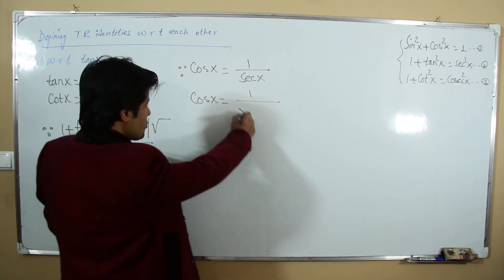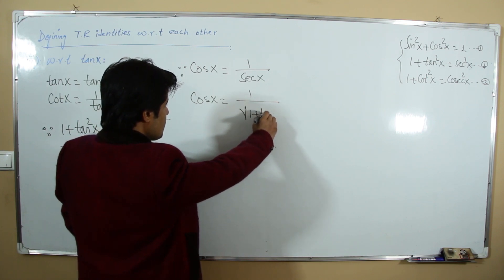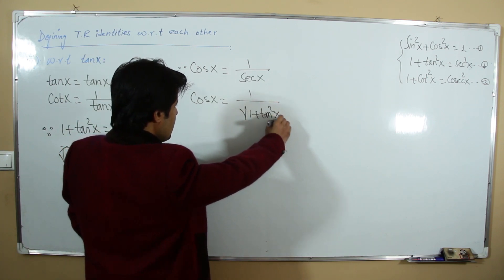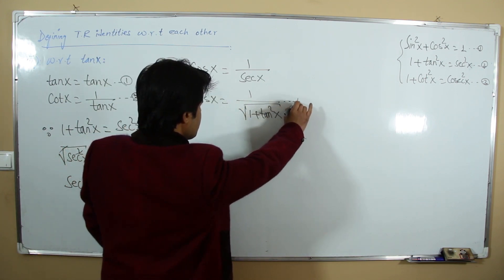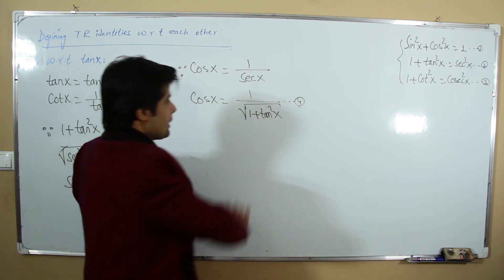Since cosine is the reciprocal of secant: cos x = 1/√(1 + tan²x). This is our fourth relation.